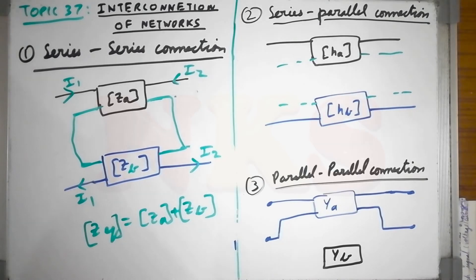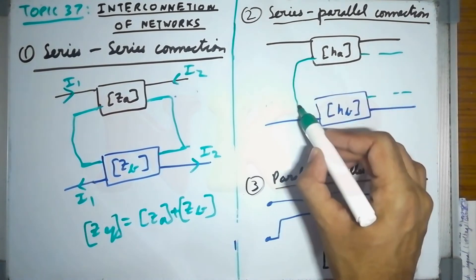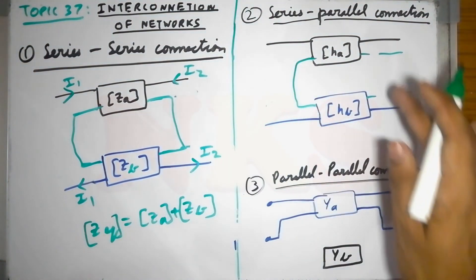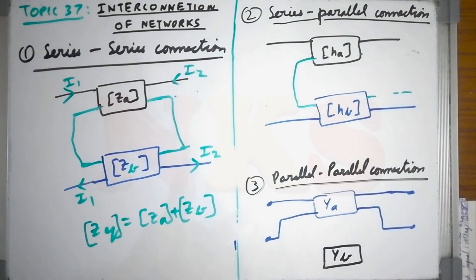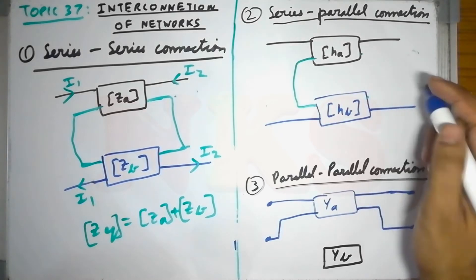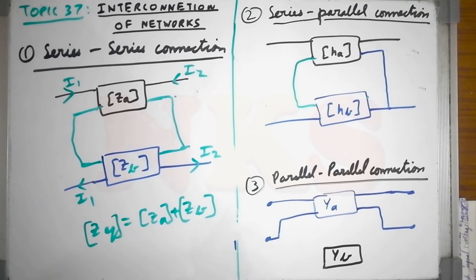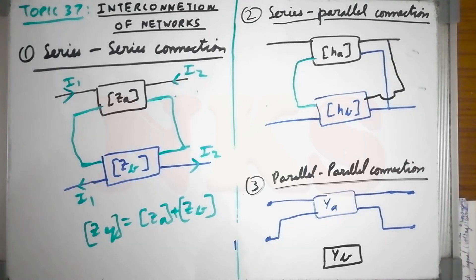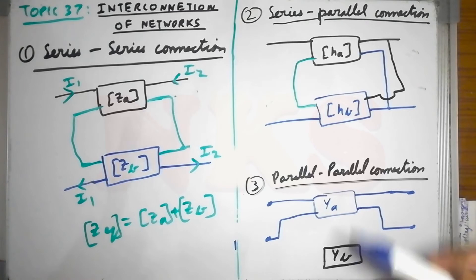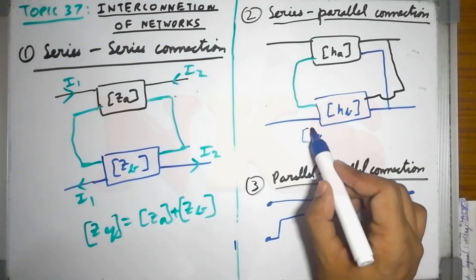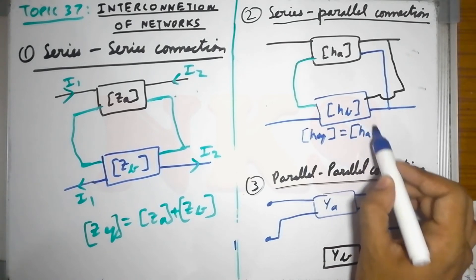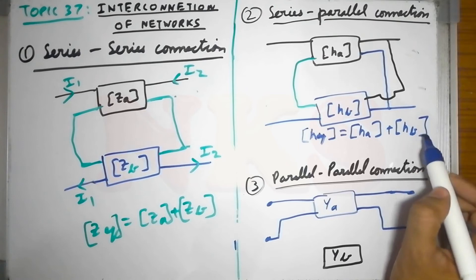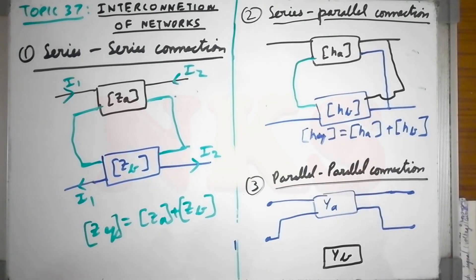Next is the series-parallel connection: one side is connected in series and the other side in parallel. For this configuration, the equivalent H (hybrid) parameters can be found directly by just adding the two H matrices: H_A plus H_B.